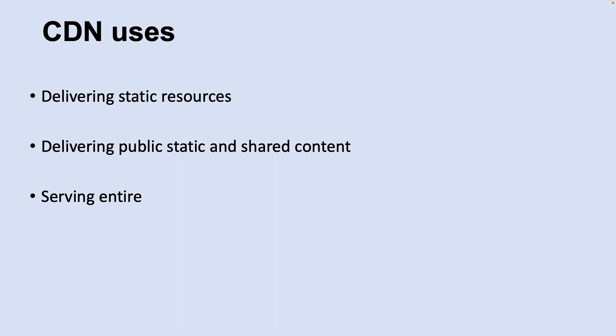Let's discuss typical CDN uses. The first one is delivering static resources, often from a website, for client applications. These resources can be images, style sheets, documents, files, client-side scripts, HTML pages, HTML fragments, or any other content that the server doesn't need to modify for each request.